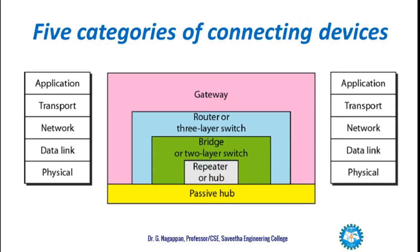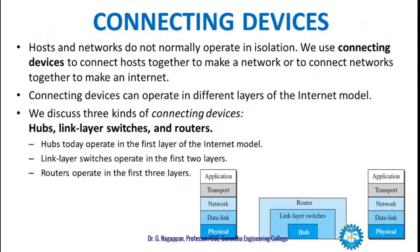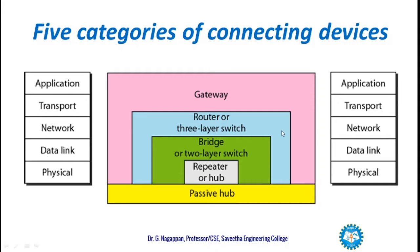This being the major classification, we also have the passive hub. We have a repeater or hub which works along with the physical layer to repeat the signal. We have a bridge or a two-layer switch. Link layer switches are split into two-layer switches or three-layer switches. A bridge is considered a synonym for a switch but with some differences. A three-layer switch is also called a router, and a gateway operates on all the layers.